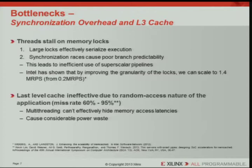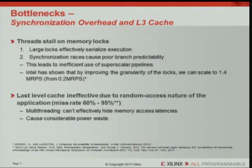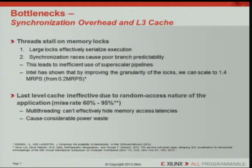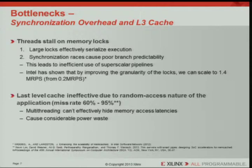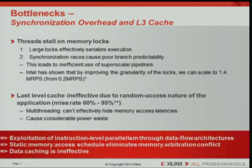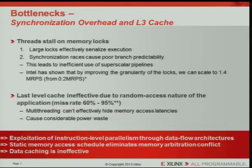The Intel tech report from 2012 addressed this by improving the granularity of locks, going from 200,000 to 1.4 million requests per second. Now they are stuck on other bottlenecks. The last problem is the L3 cache, which is fairly ineffective due to the random access nature of the application. The ISCA paper puts the miss rate at 60 to 95%, meaning multi-threading can't effectively hide memory access latency. The L3 cache consumes maybe a quarter to a third of the die area, leading to power waste. For us, this meant exploring instruction-level parallelism with a data flow architecture rather than data parallelism, using static memory access to minimize synchronization and arbitration overheads, and not bothering with data caching.